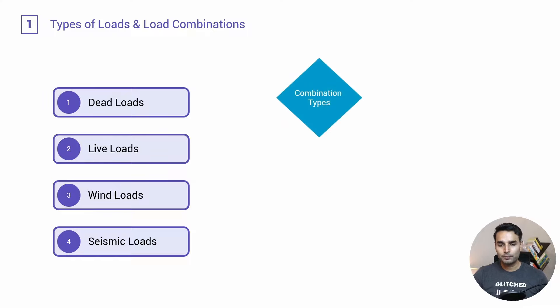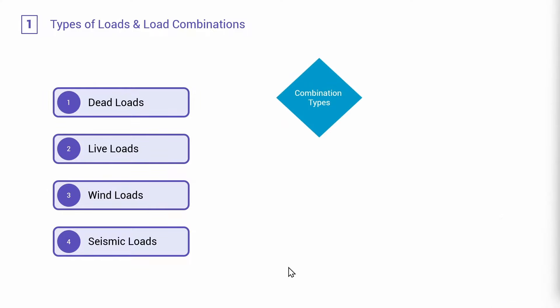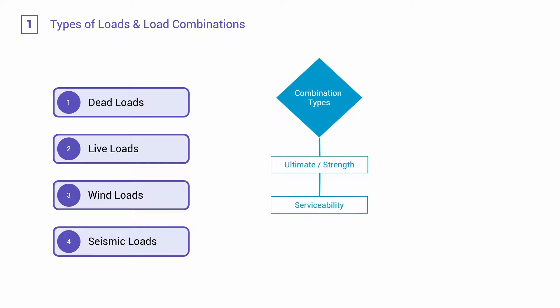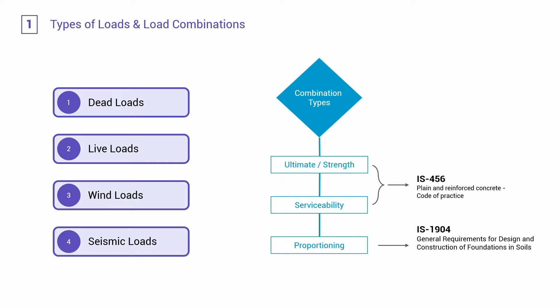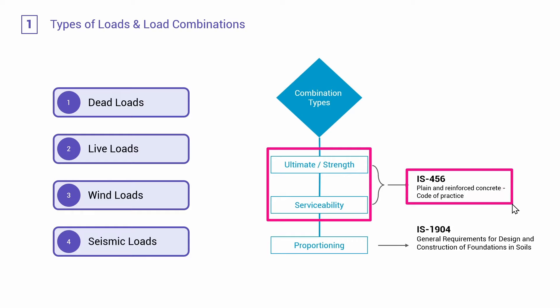When it comes to the combination types, this will primarily depend upon a few things. For example, it will depend upon whether we are designing our columns for ultimate loads or the failure conditions, or with respect to the strength criteria, or whether we are doing it with respect to the serviceability criteria. Both these criteria come from IS 456, which is the plain and reinforced concrete code — the Indian standard code.